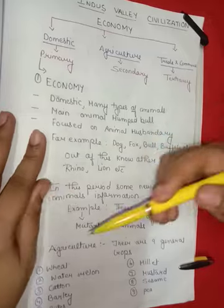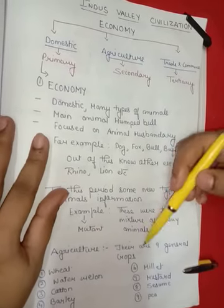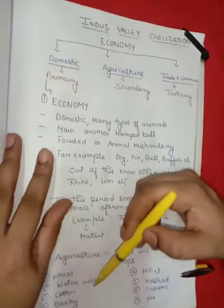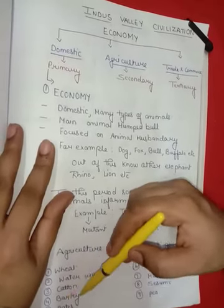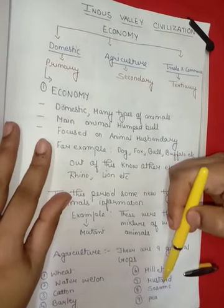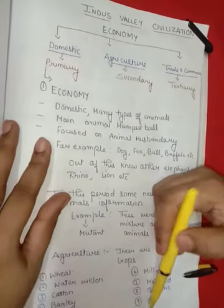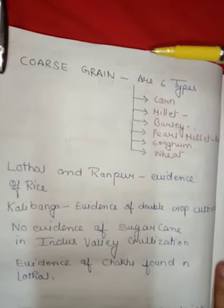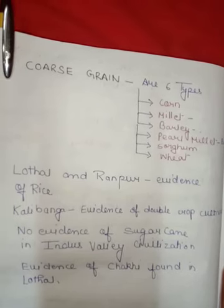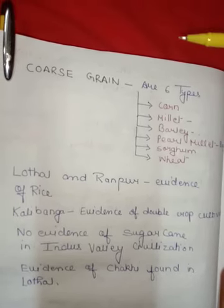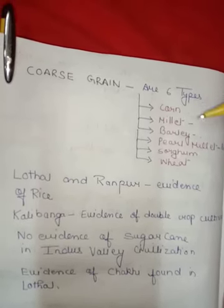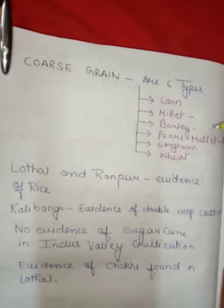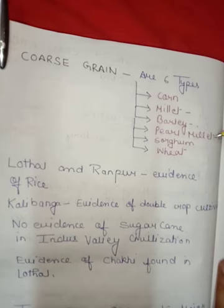The second sector is agriculture. There are nine general crops: wheat, watermelon, cotton, barley, dates, milk, mustard, sesame, and pea. There are also six coarse grains in Indus Valley Civilization: corn, millet, barley, pearl millet (bajra).